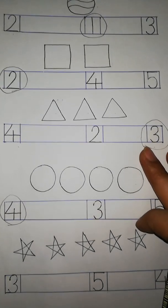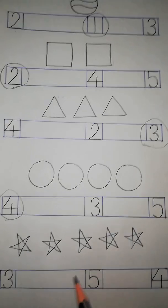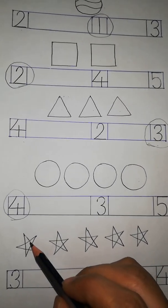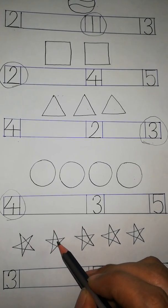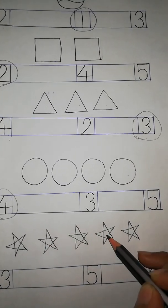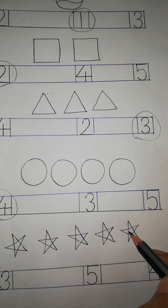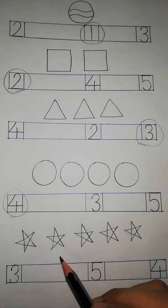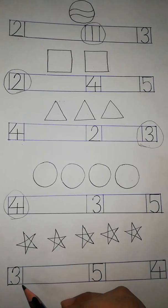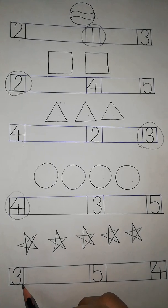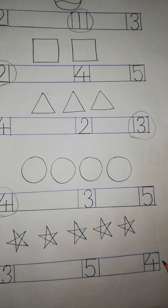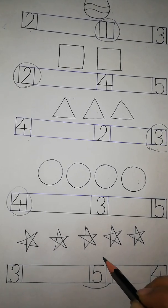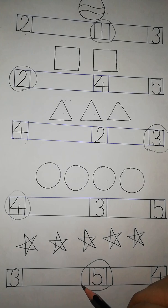Then we count the picture of stars. There are some stars. How many stars here? 1, 2, 3, 4, and 5. There are 5 stars. Is it 5? No. Is it 5? No. Is it 5? Yes. So we circle the number 5.